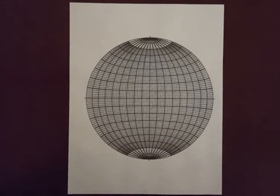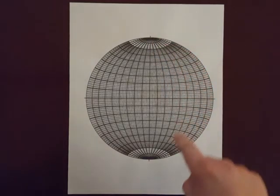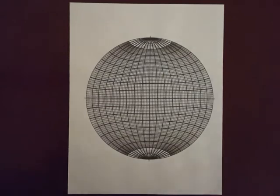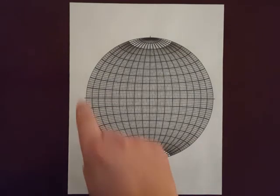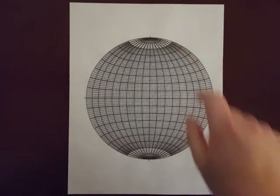Next is these lines of longitude. These are called great circles. These lines of latitude are called small circles.